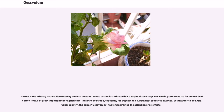Cotton is the primary natural fiber used by modern humans. Where cotton is cultivated, it is a major oilseed crop and a main protein source for animal feed. Cotton is thus of great importance for agriculture, industry, and trade, especially for tropical and subtropical countries in Africa, South America, and Asia. Consequently, the genus Gossypium has long attracted the attention of scientists.